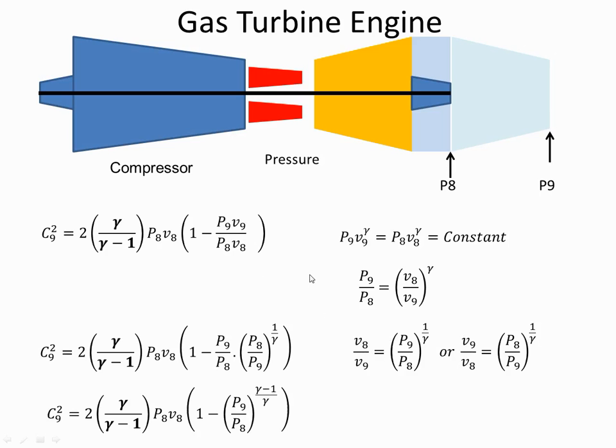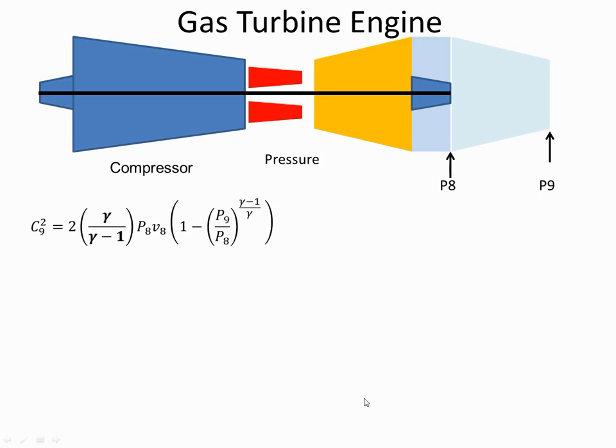If I multiply P9 to the power of 1 by P9 to the power of 1 over gamma. So the power of 1 is like gamma over gamma. So gamma over gamma minus 1 over gamma gives me gamma minus 1 over gamma. So this part of the equation simplifies down to this part. I'll carry that over onto this slide.